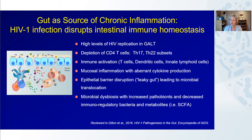Now, this inflammatory state feeds back on the epithelial barrier, causing it to be leaky and ultimately resulting in microbial translocation. Likewise, this epithelial barrier disruption leads to a microenvironment that promotes microbial dysbiosis, with changes in the community structure of the mucosal microbiome. This has been characterized in many cases by an increase in pathobiont bacteria and a decrease in immune regulatory bacteria.